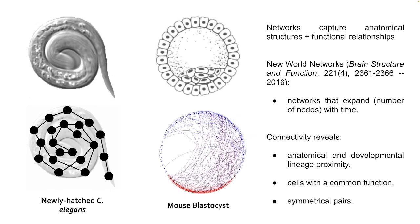You can also look at something like the mouse blastocyst — an early stage of mouse development with an inner cell mass and outer edge of cells. You can characterize cells in different classifications depending on their state, mapping out chemical connections or other relationships using network topology. These are embryo networks, and they capture anatomical structures and functional relationships.